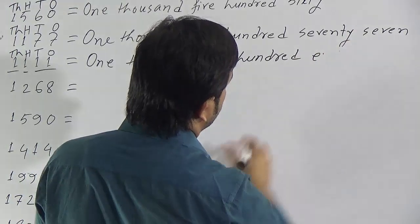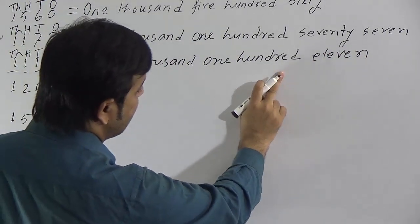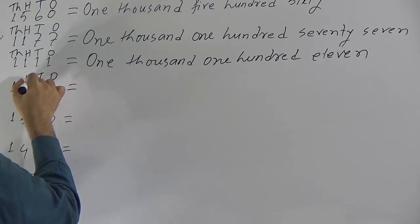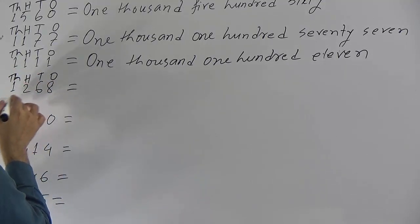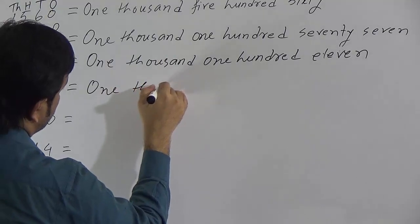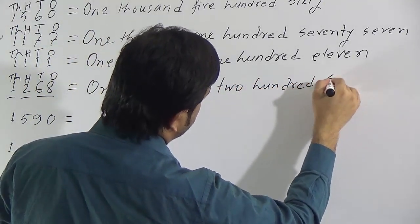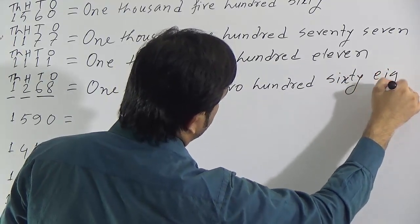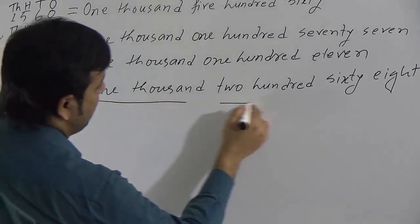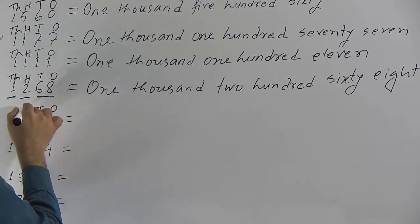One thousand two hundred sixty-eight — 1268. One thousand two hundred sixty-eight.